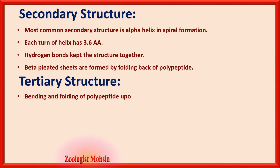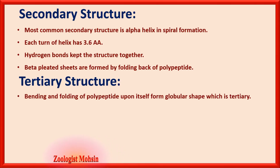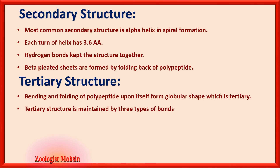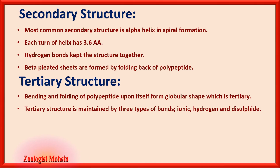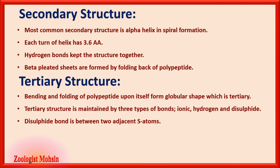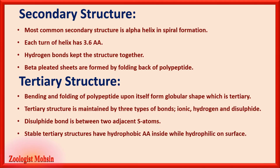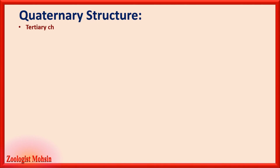Tertiary structure: bonding and folding of a polypeptide upon itself forms a globular shape. Tertiary structure is maintained by three types of bonds: ionic, hydrogen, and disulfide bonds. The disulfide bond is between two adjacent sulfur atoms. All tertiary structures have hydrophobic amino acids on the inside while hydrophilic amino acids are on the surface or outside — this is a very important MCQ fact.